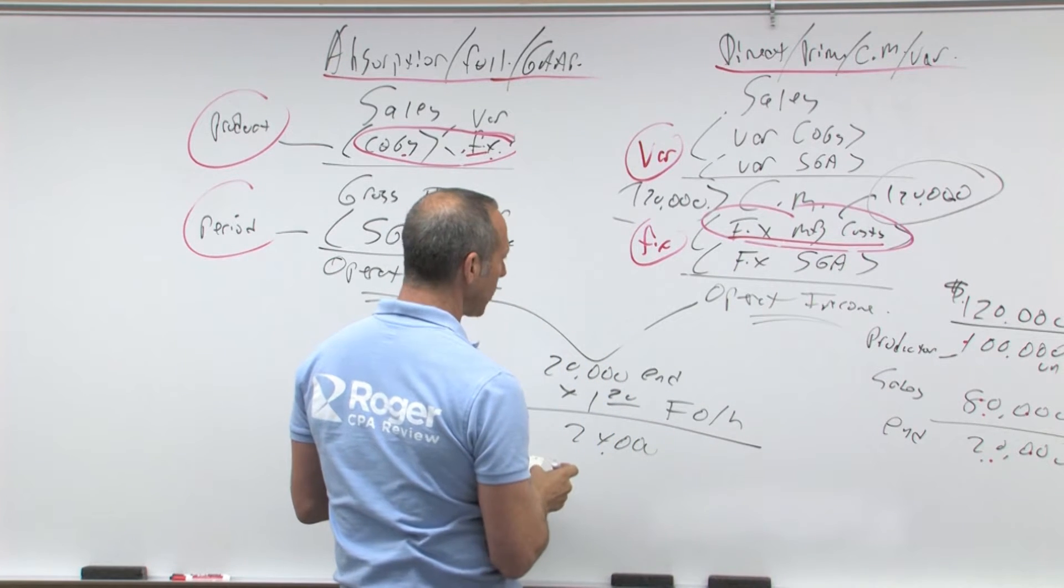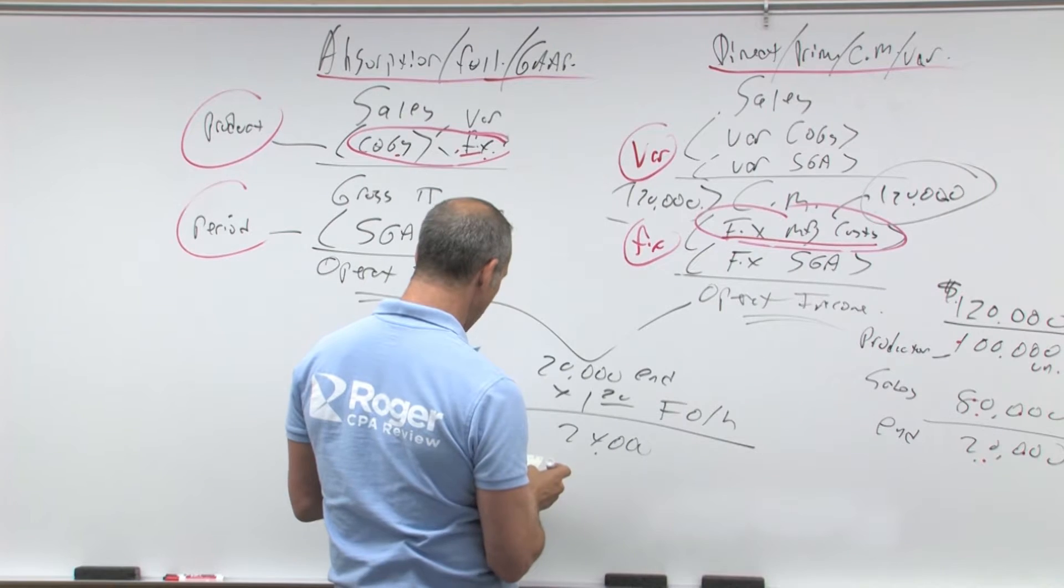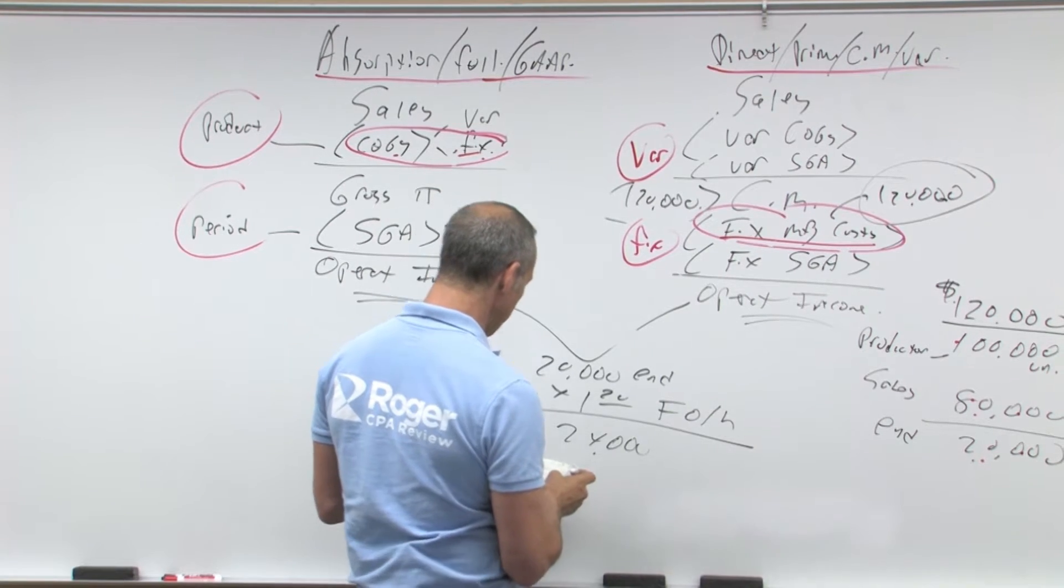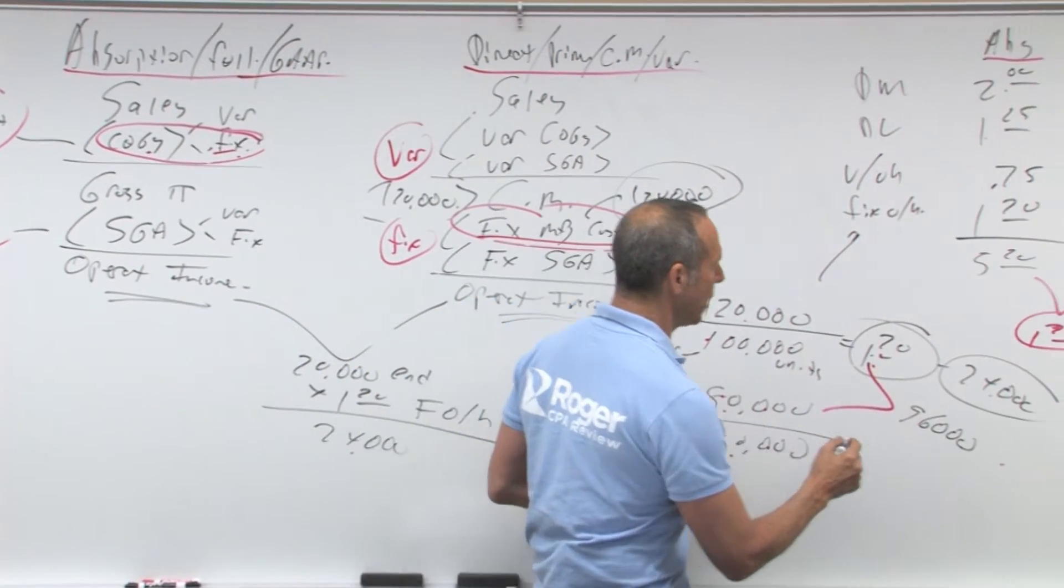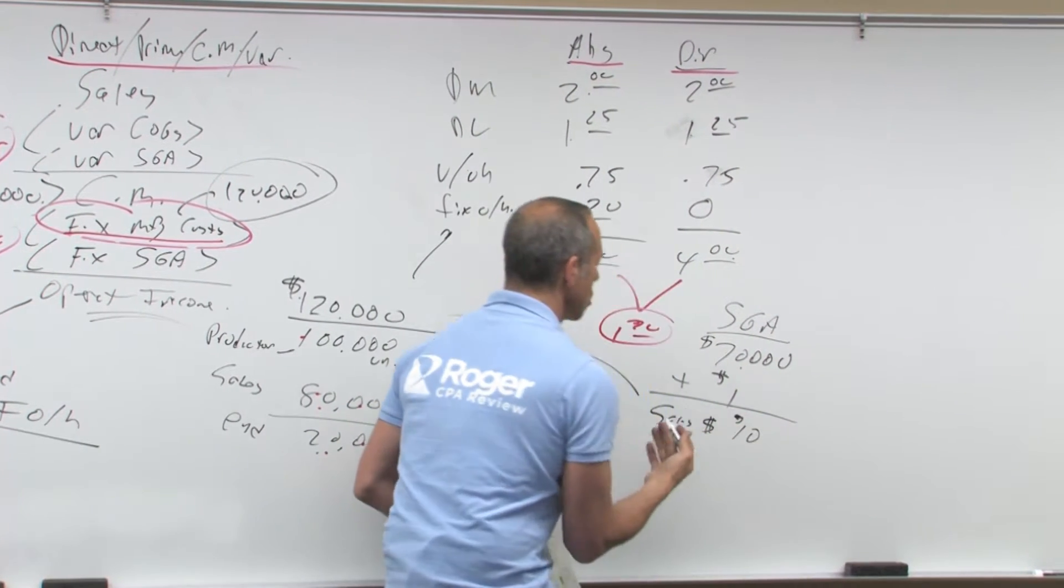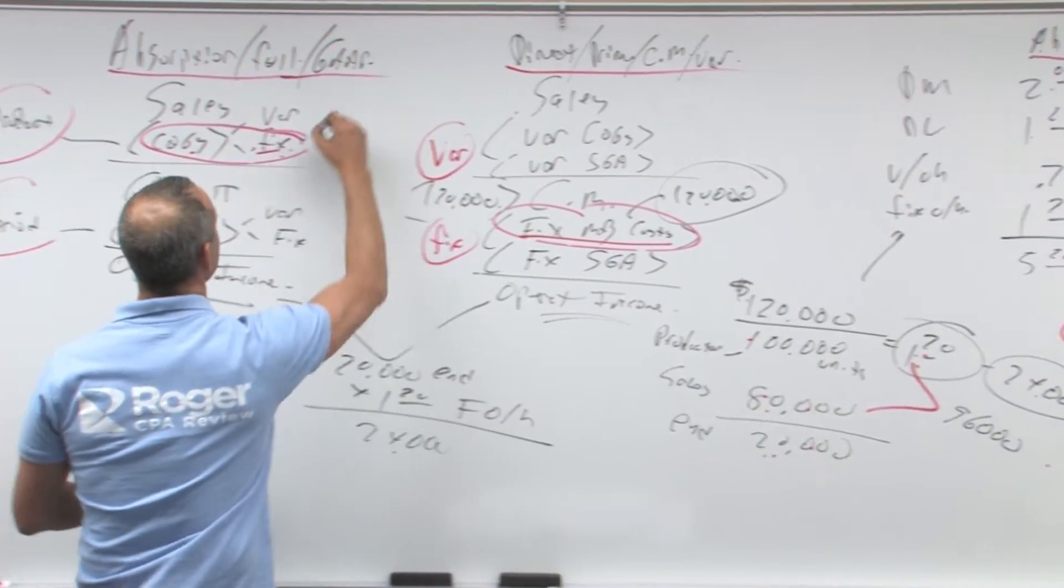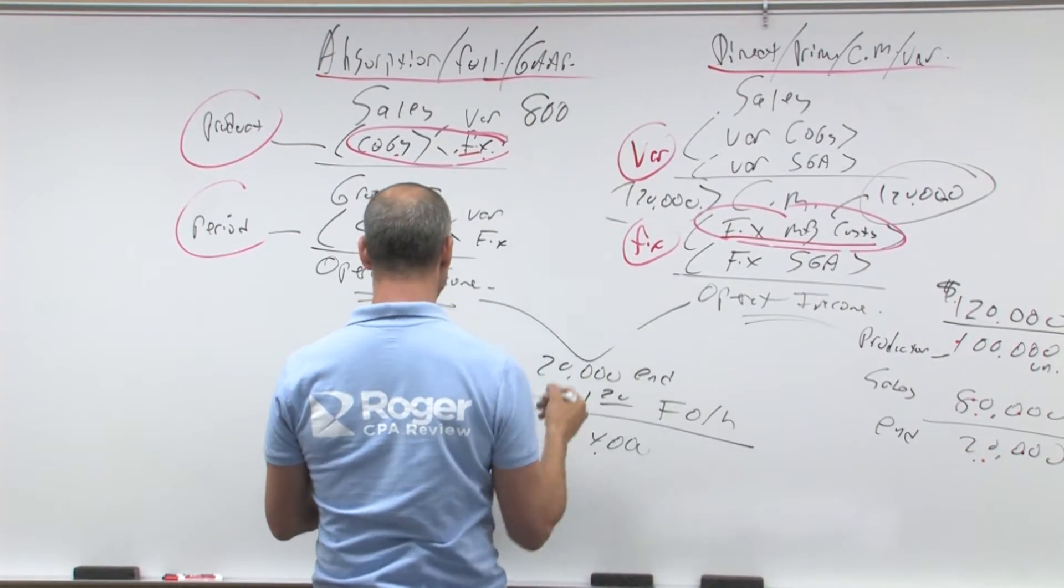All right, so I sold 80,000 units, let's say that my sales price was $10 a unit. So my sales price over here is 10 bucks a unit. So I sold $10 at 80,000 units, I'm gonna have $800,000 of sales revenue.